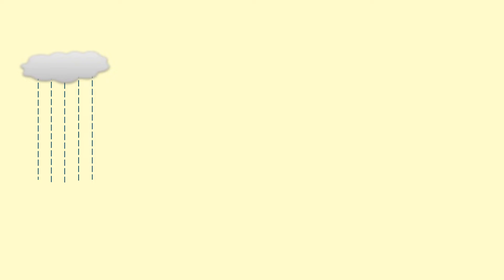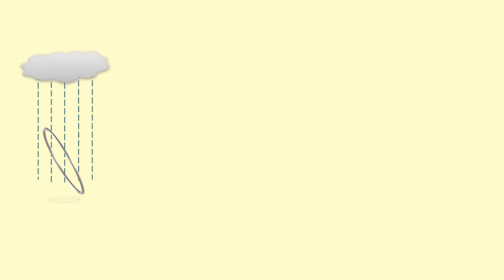To understand magnetic flux, imagine rain falling through a ring. Right now we get a lot of rain going through it, but as we start tilting the ring we get less and less rain going through it. Eventually we have no rain going through it when it's vertical like so.